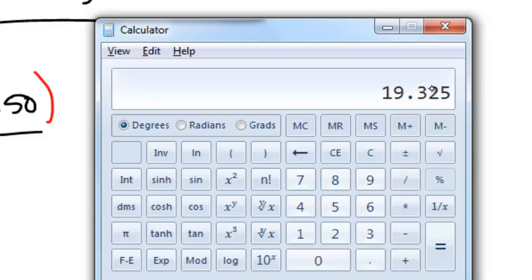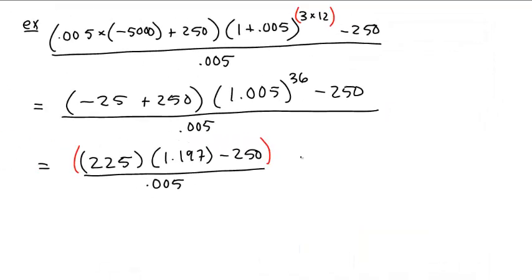If you have a fancier calculator, you would have to use the parentheses. Well, why don't we take a step, why don't we say 19.325. This is 19.325 divided by .005.